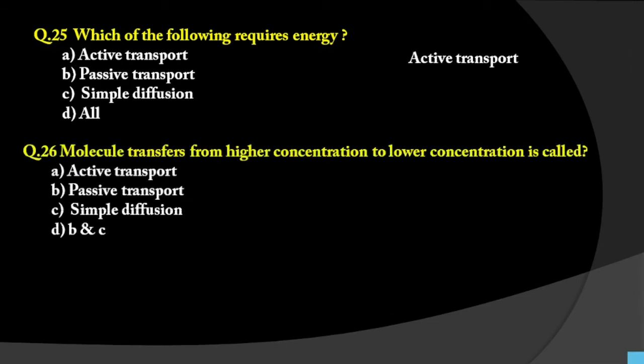Question number 26: Molecule transfer from higher concentration to lower concentration is called what? Options are active transport, passive transport, simple diffusion, or B and C both. Passive transport and simple diffusion both involve movement from higher to lower concentration, with no energy requirement. The answer is D — B and C both — passive transport and simple diffusion.